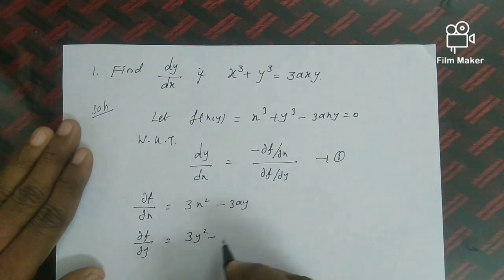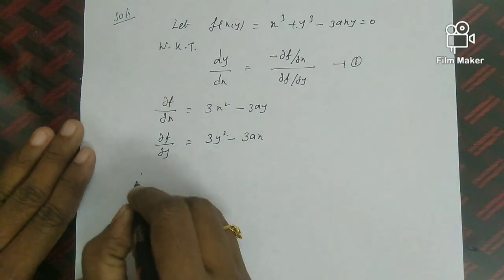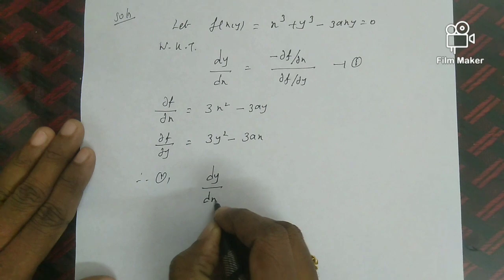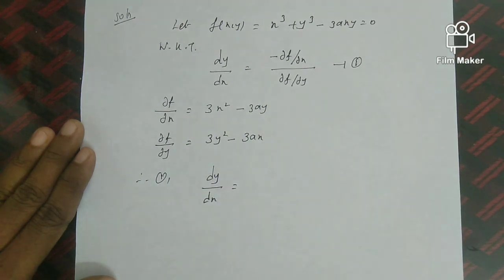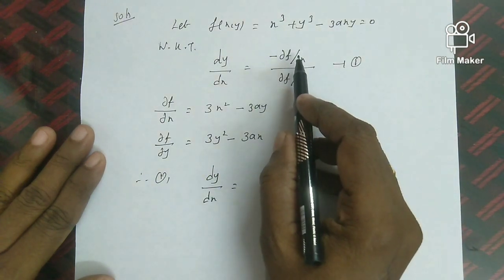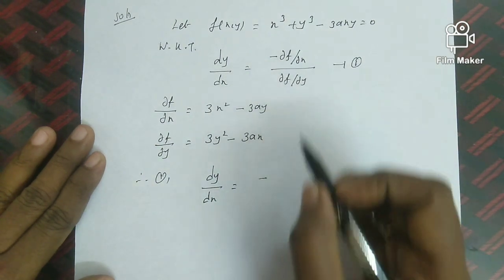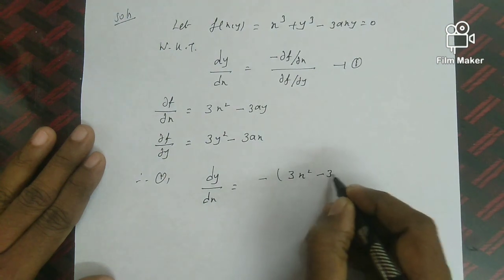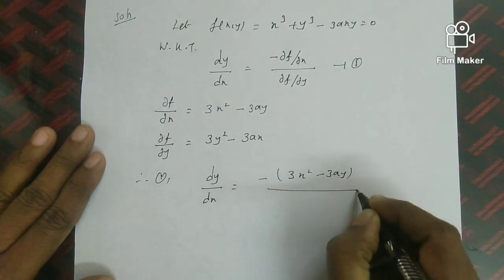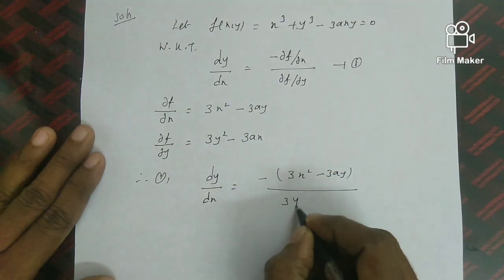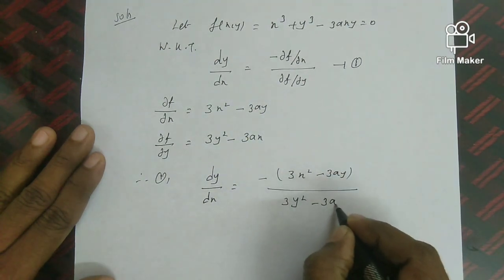Therefore, from equation 1, dy/dx = −(∂f/∂x)/(∂f/∂y). Substituting: ∂f/∂x = 3x² − 3ay and ∂f/∂y = 3y² − 3ax. So dy/dx = −(3x² − 3ay)/(3y² − 3ax). The 3 in numerator and denominator cancels.